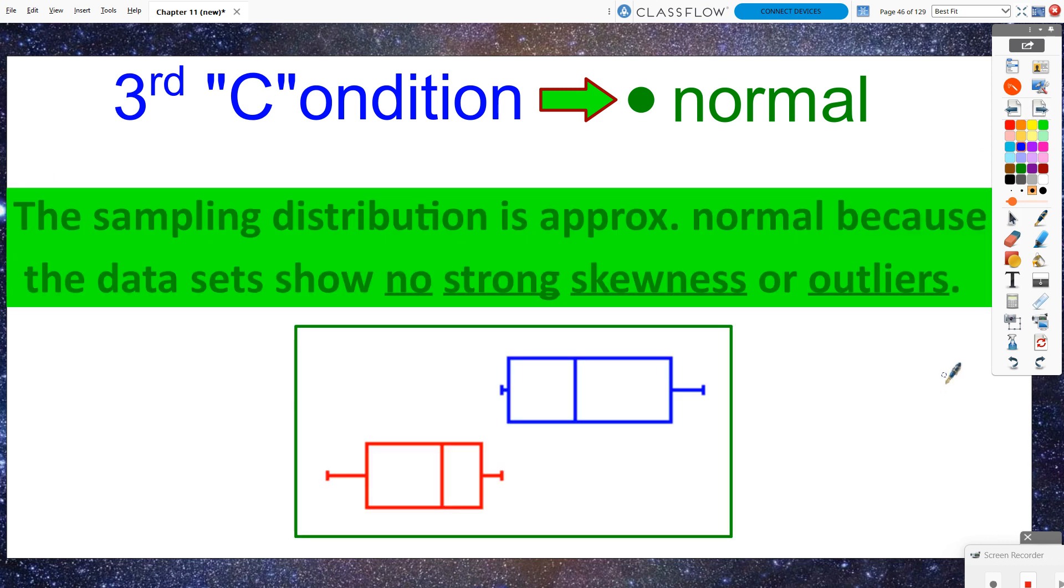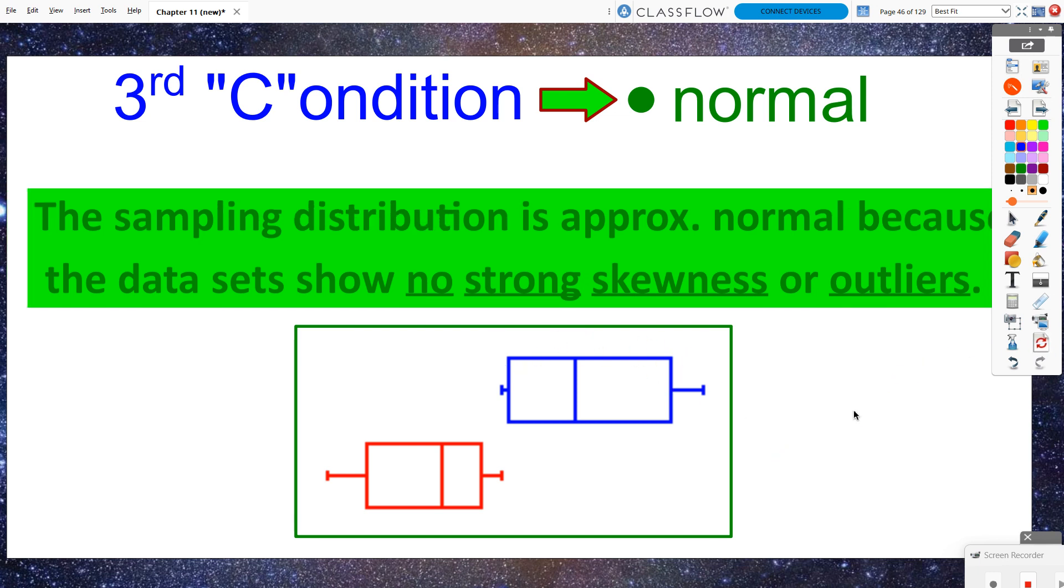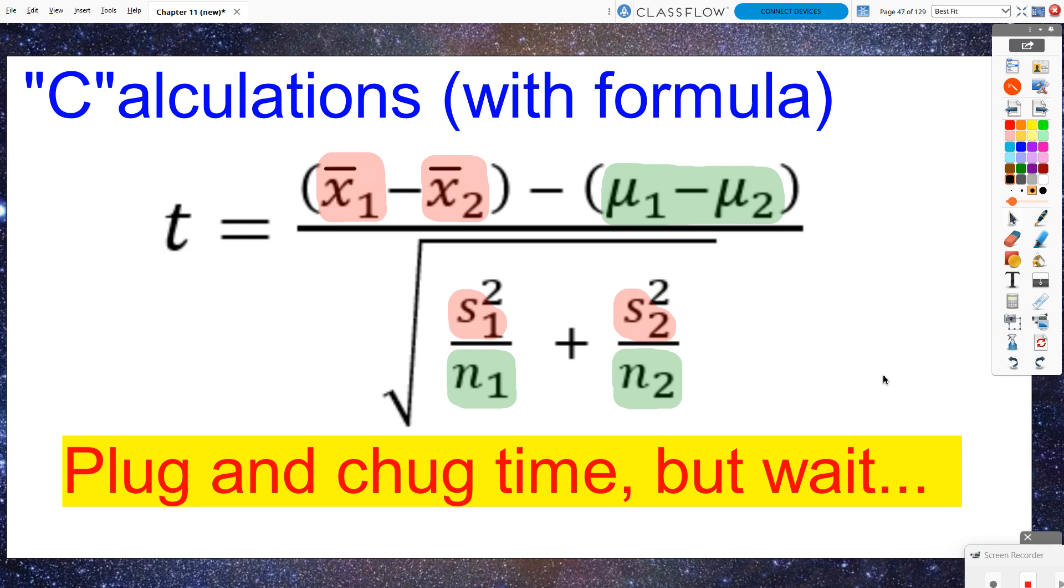Once we see those box plots, we are on the lookout for strong skewness and or outliers. If neither one of those things are found, then we get to state that the sampling distribution is approximately normal because the data sets show no strong skewness or outliers. You have to draw sketches of what those box plots looked like on your calculator. My recommendation before you draw them out is to hit zoom nine on your calculator so that it maximizes the box plot on your calculator screen as much as possible. I took a look at the box plots of our two data sets here. There were definitely no outliers present. I wouldn't really say there's strong skewness. There definitely is some skewness. The target data looked to be skewed left-ish, and the Walmart data looked to be more skewed right-ish. But nothing that I would think would be too strongly skewed.